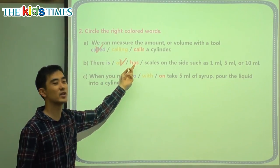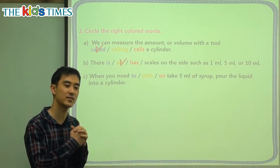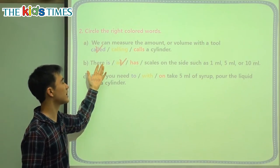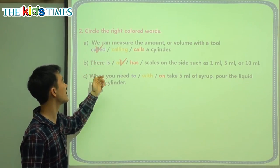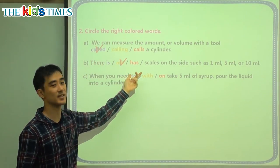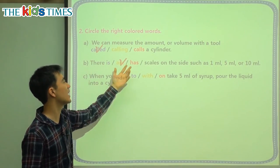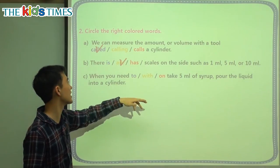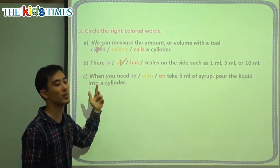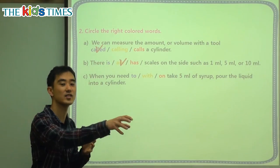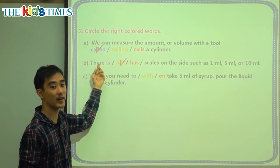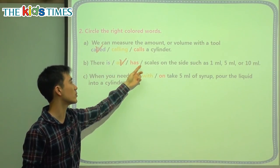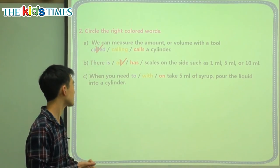We don't say has here. Has means to have something. We can say a fish has scales, or my friend has scales. But there refers to a location — where something is — so we use there are, not has. If it were a person or a thing doing the having, then we would use has.